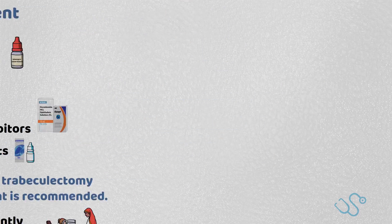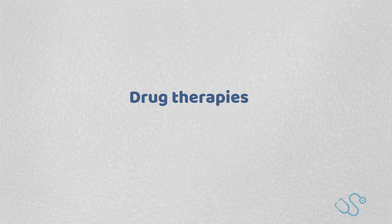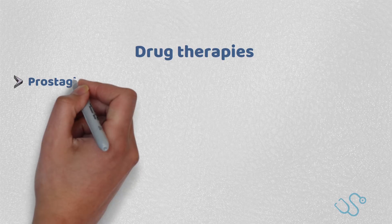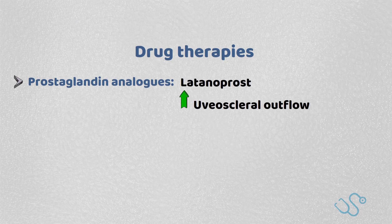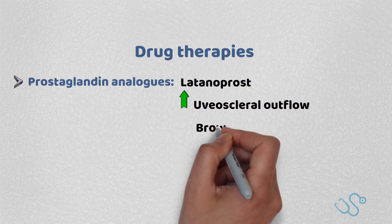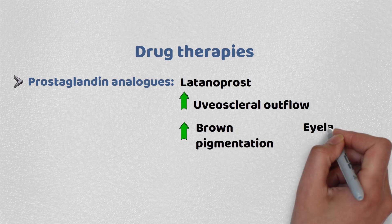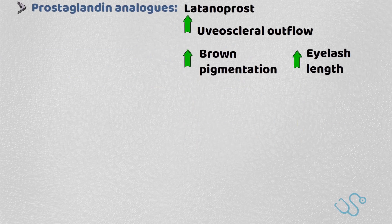We should cover specific drug therapies and understand the basics a little more. Prostaglandin analogues such as latanoprost increase uveoscleral outflow, but they tend to increase the brown pigmentation around the iris and can increase eyelash length.